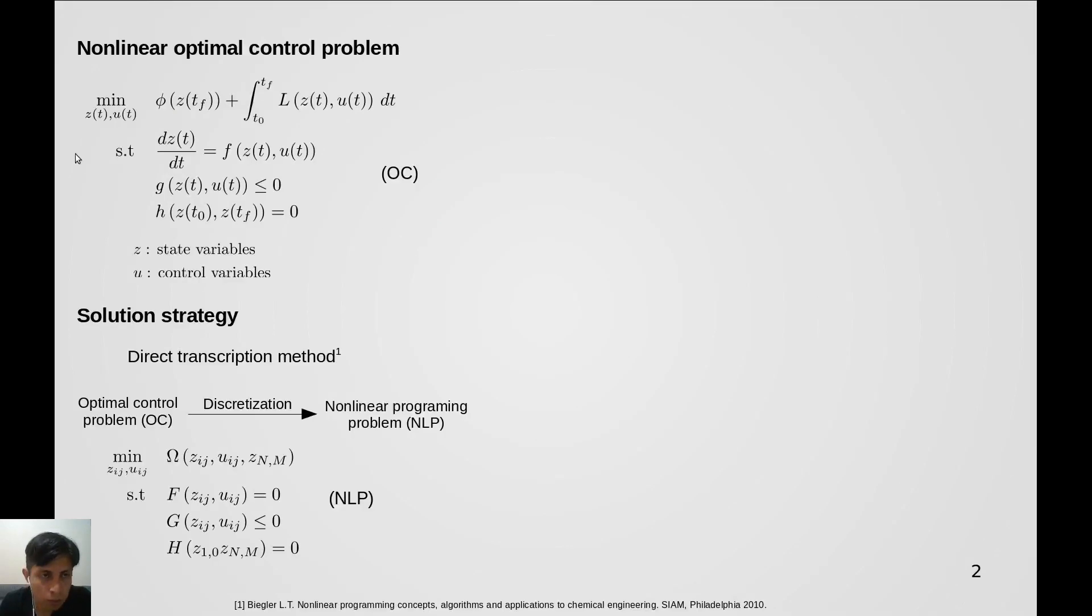Let's assume that we want to minimize an objective function subject to a set of differential equations that model the process system, some inequality and equality constraints, so we have state and control variables which are actually functions of time.